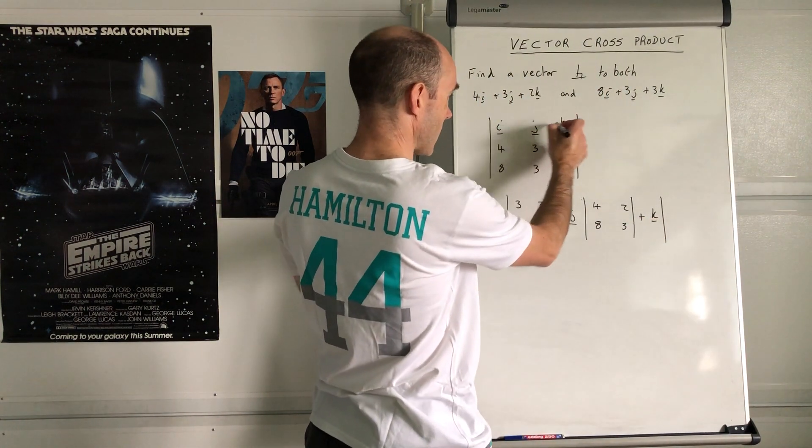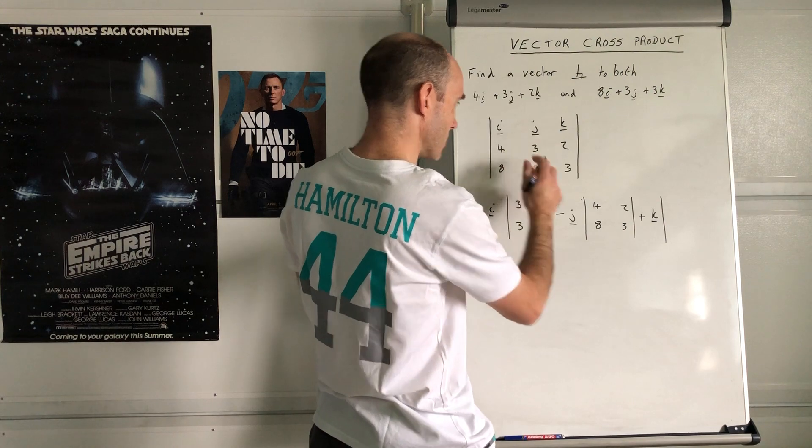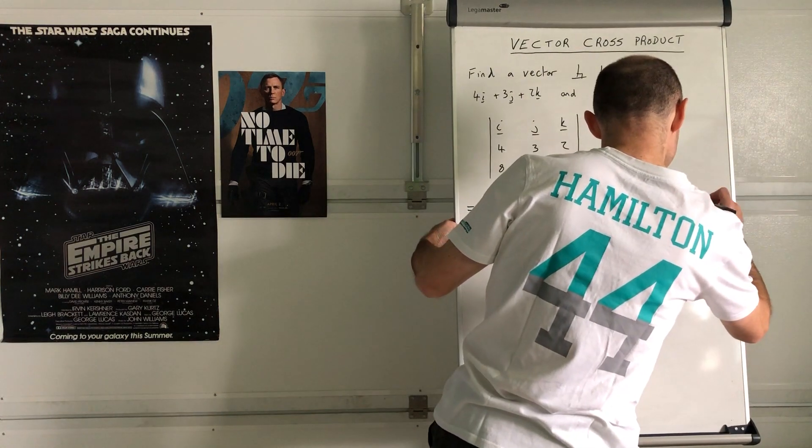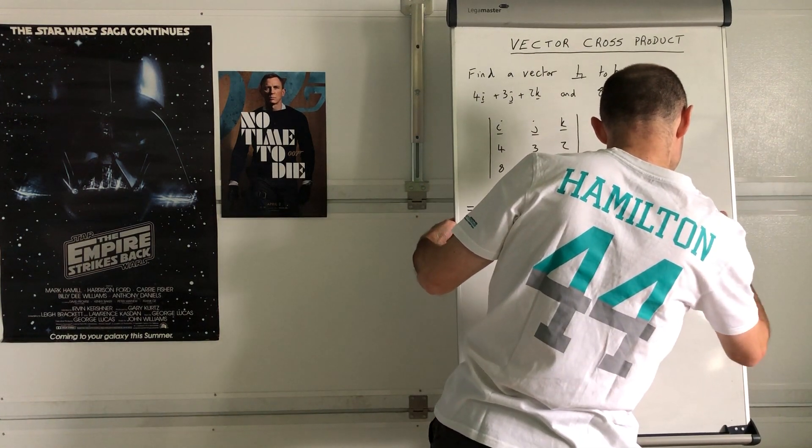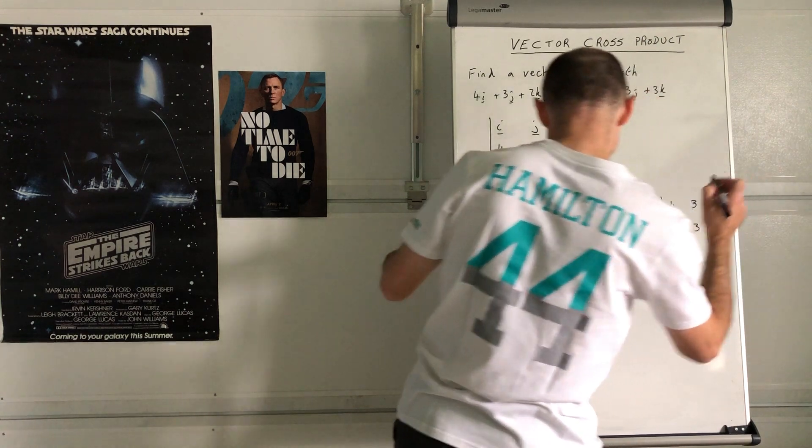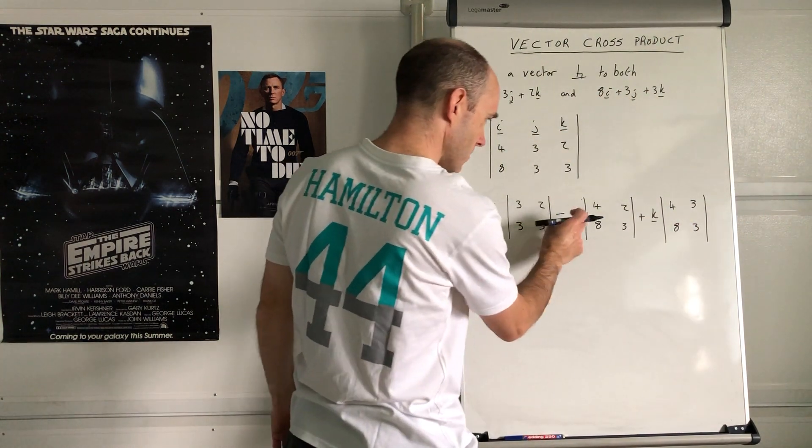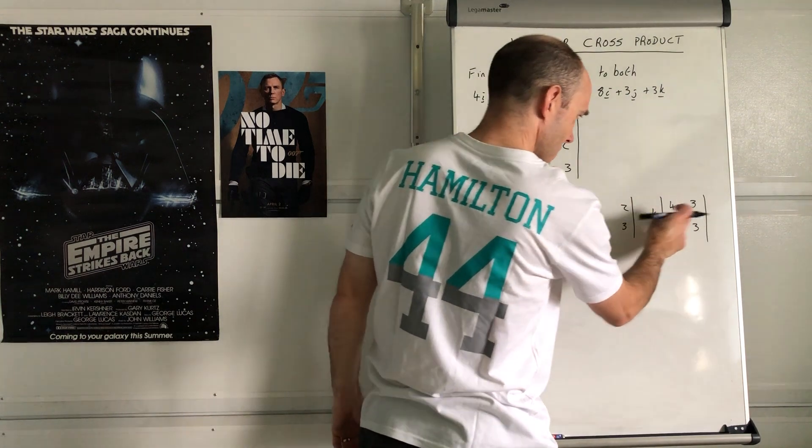When you cross out that column, you're left with 4, 3, 8, 3. So your i times that determinant, subtract j times that term, plus k times that determinant.